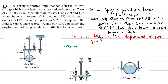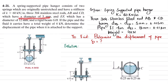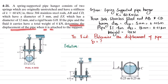Welcome back. Problem 4-21: a spring-supported pipe hanger consists of two springs which are originally unstretched and having a stiffness k = 60 kilo-newton per meter, 304 stainless steel rods AB and CD which have a diameter of 5 millimeter, and EF which has a diameter of 12 millimeter, and rigid beam GH. If the pipe and the fluid it carries have a total weight of 4 kilo-newton, determine the displacement of the pipe when it is attached to the support.